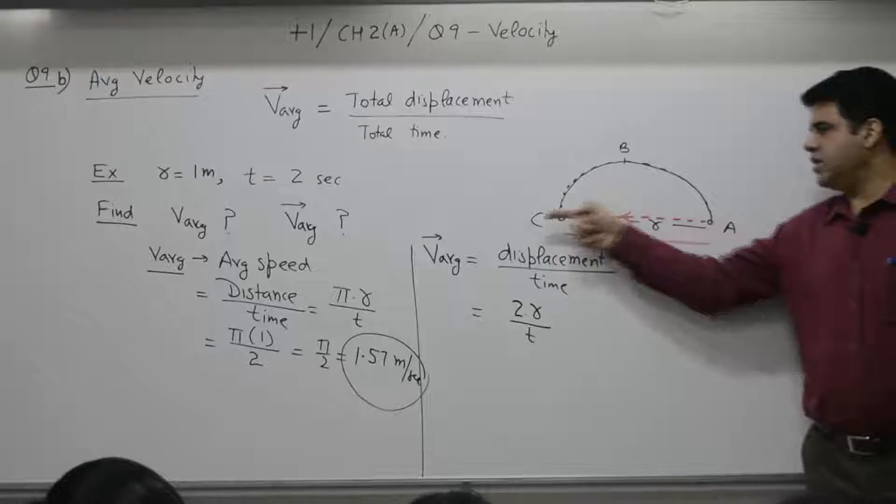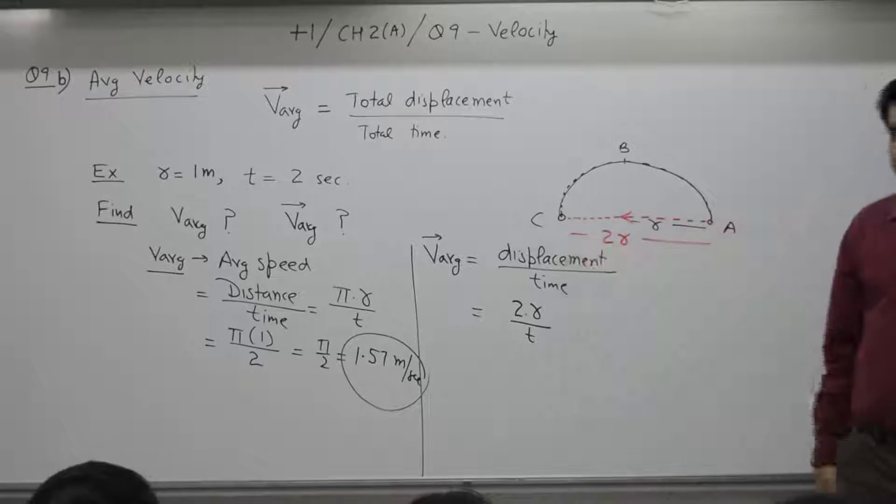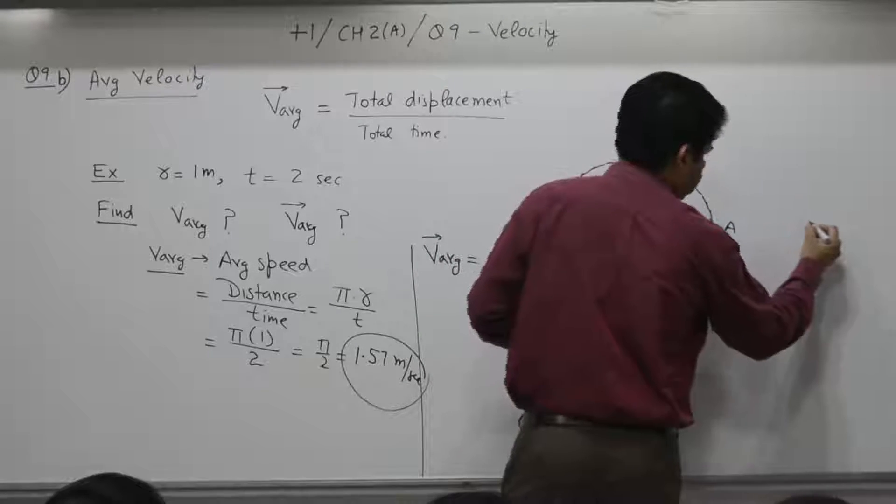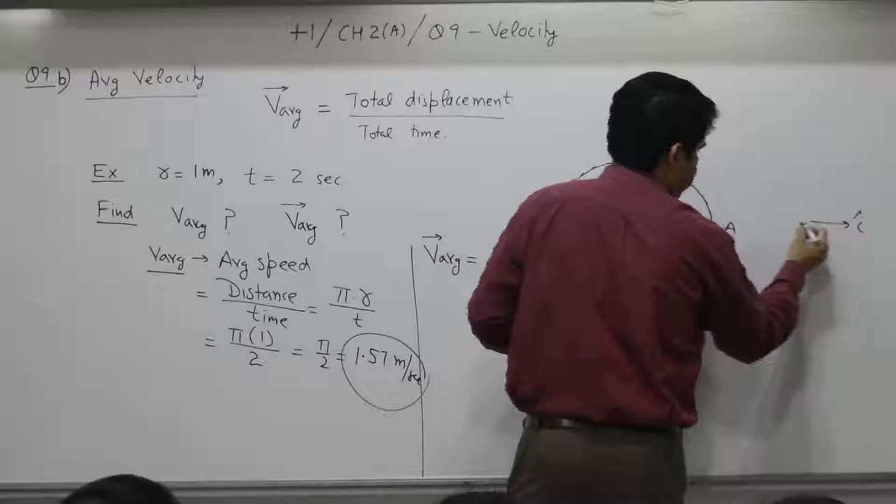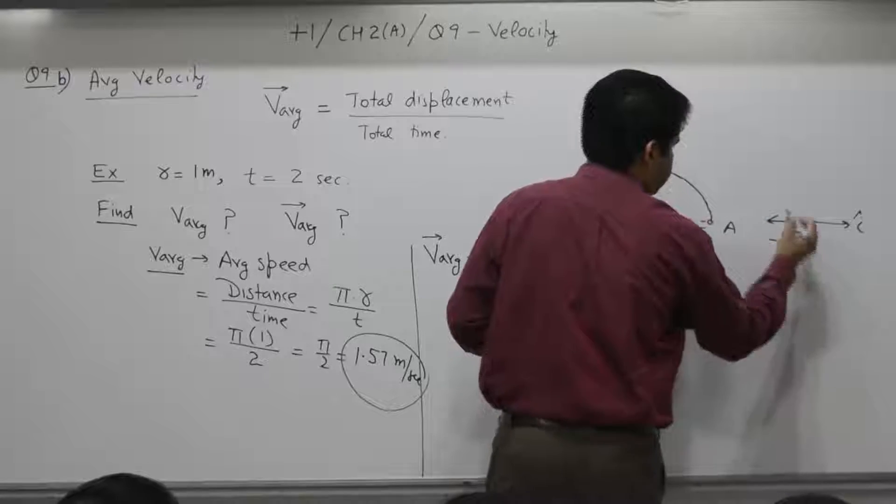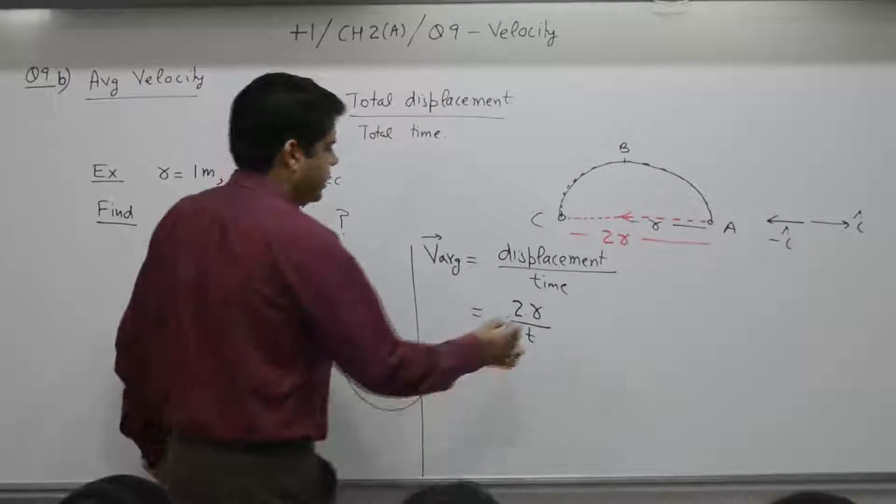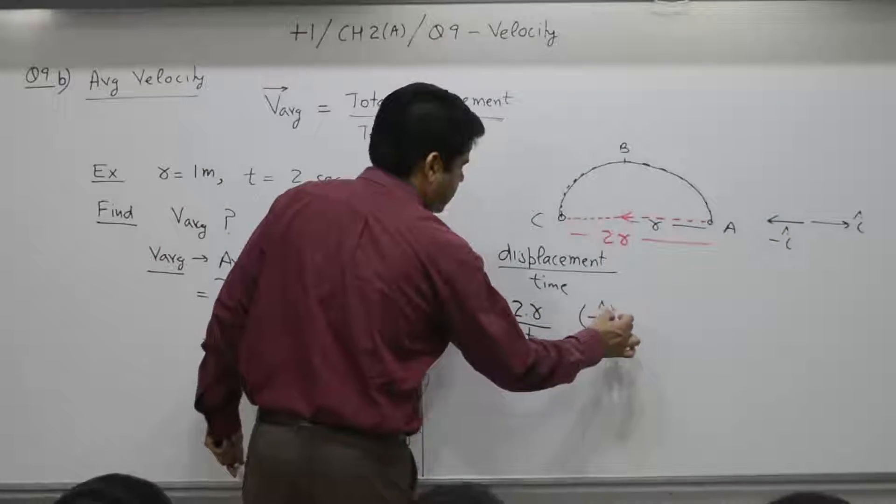Its magnitude is 2r divided by time. Because this is a vector quantity, you can also specify the direction. Direction is a vector A to C. How do you represent this? A to C. If you call this direction as i and call this direction as minus i, then direction is minus i.